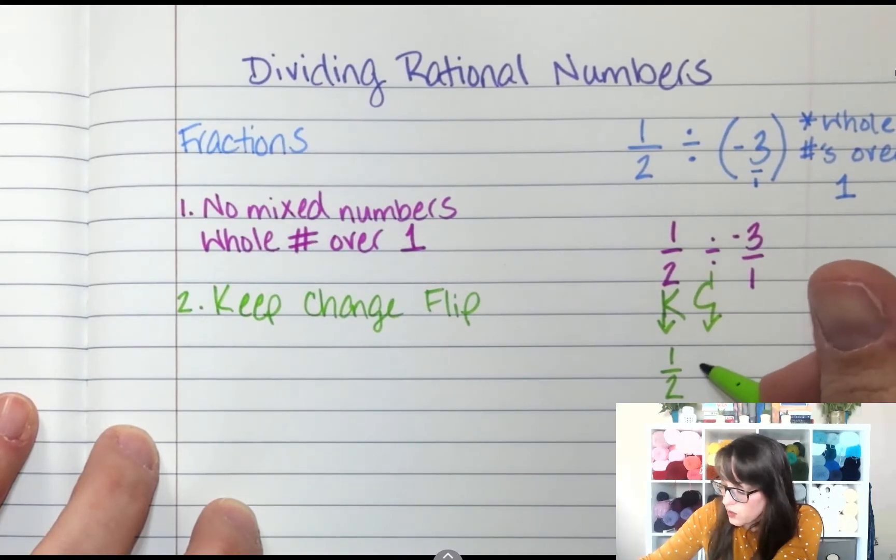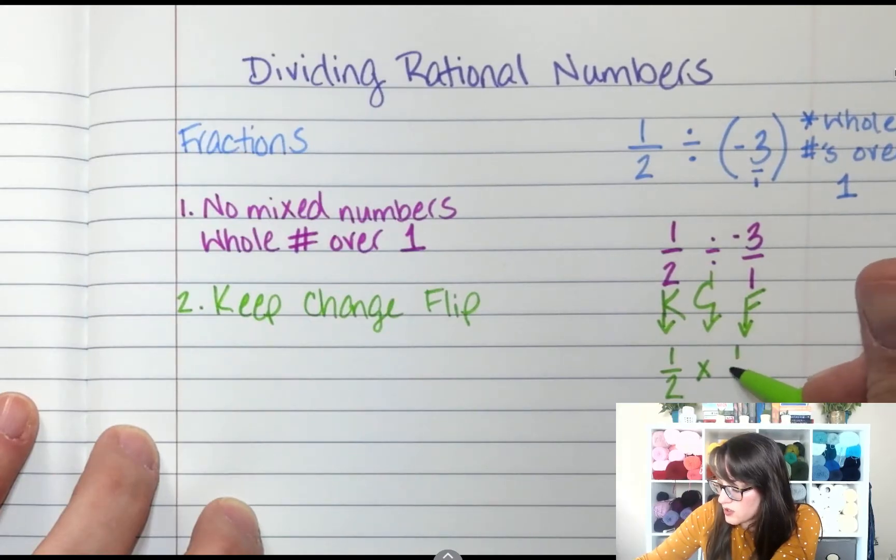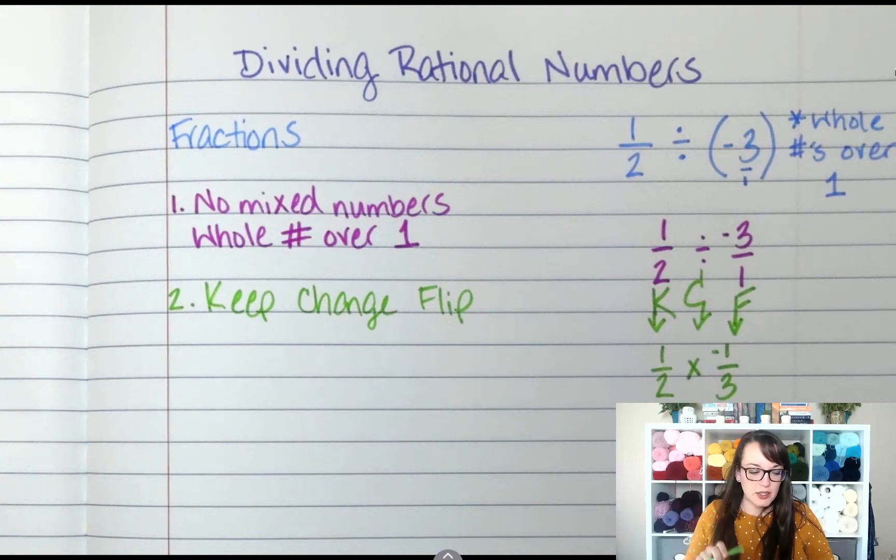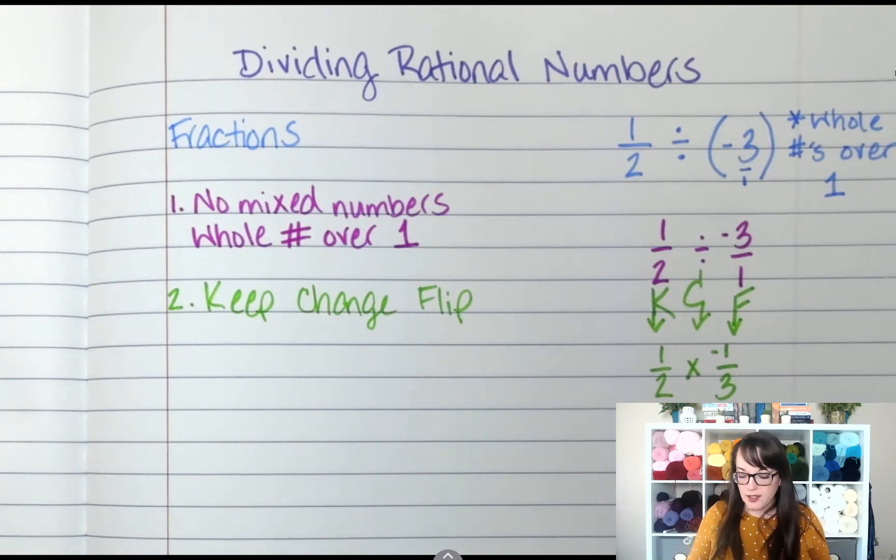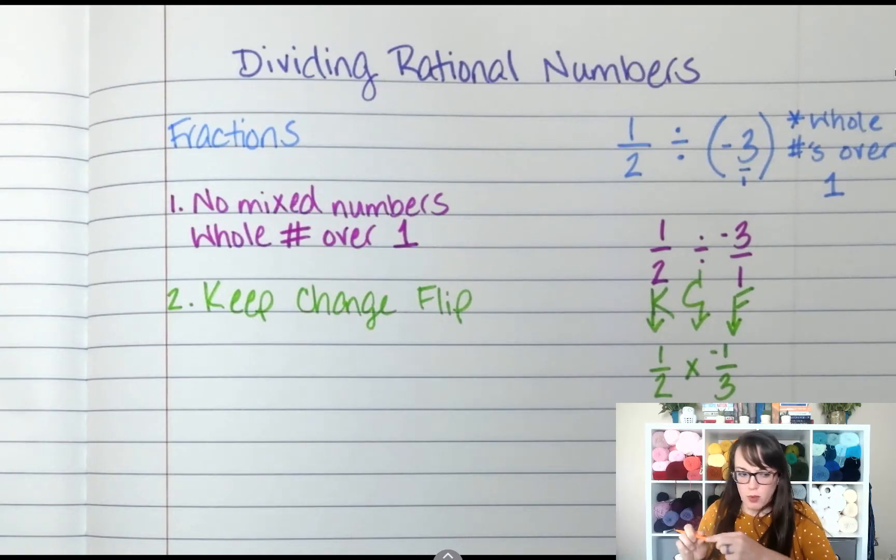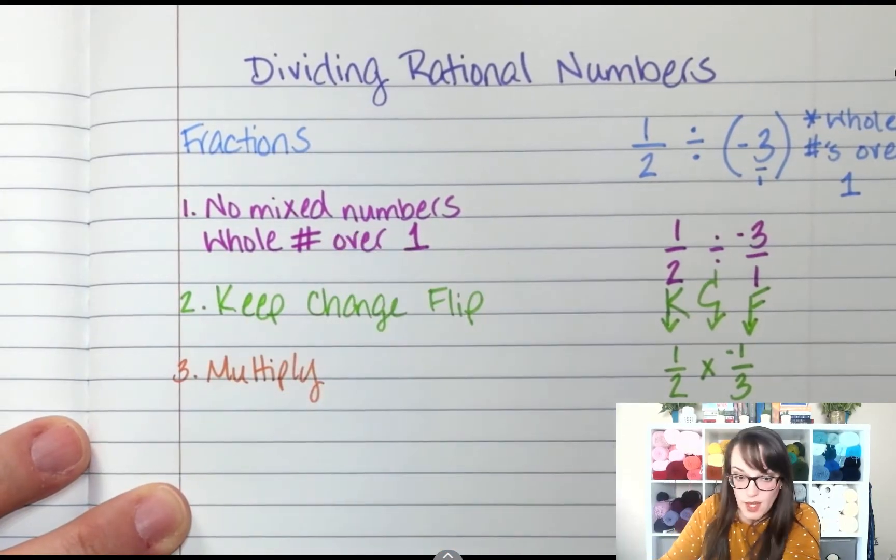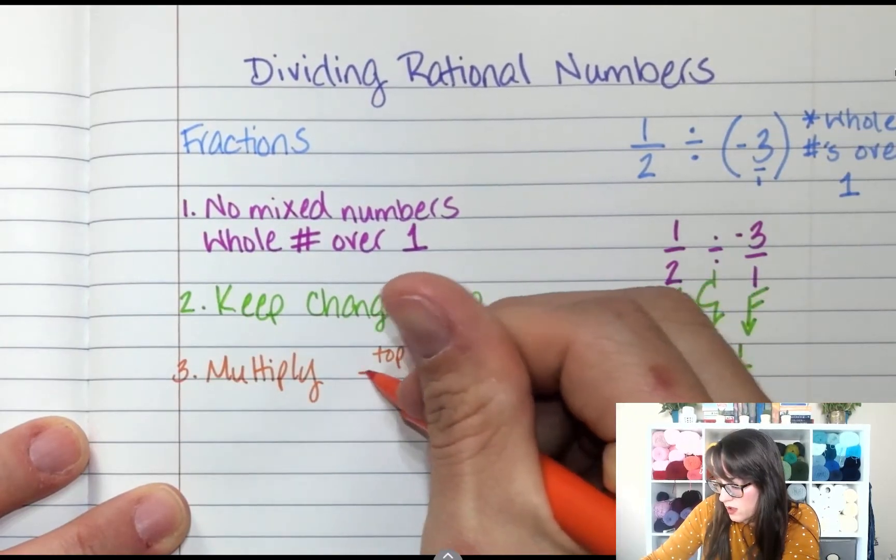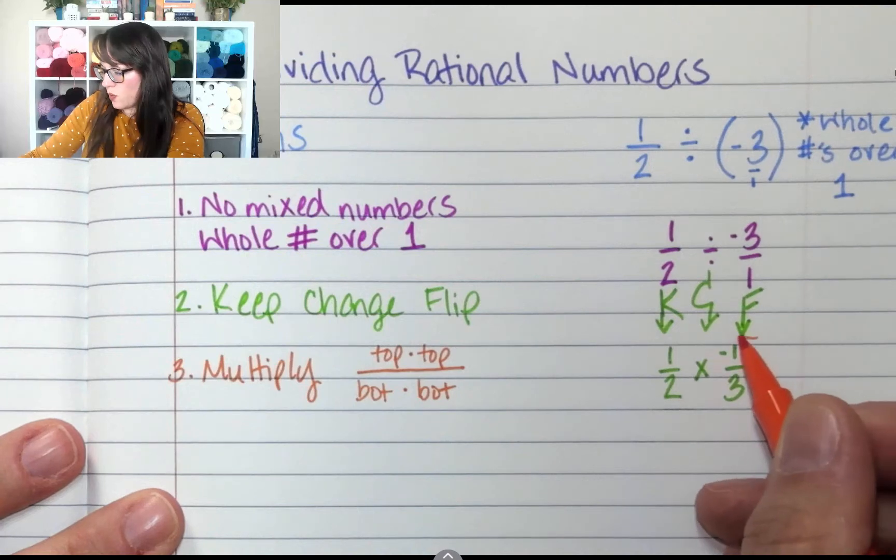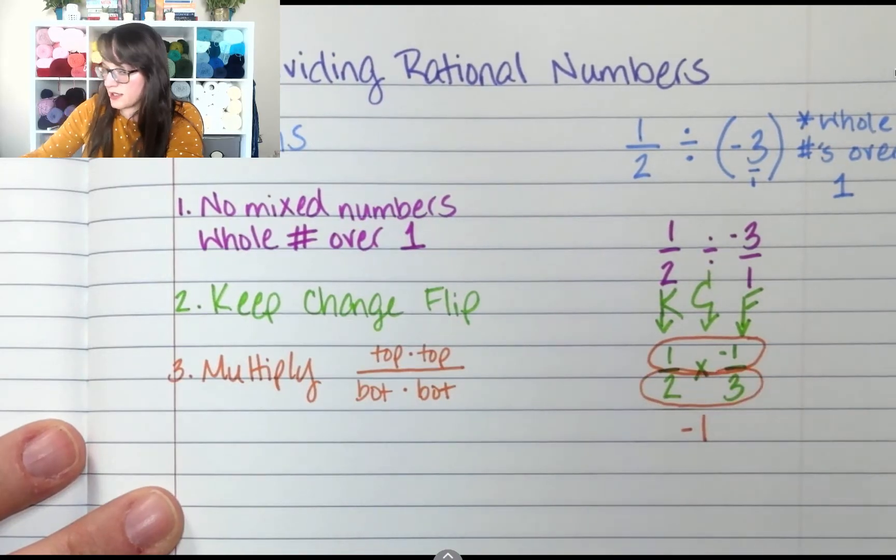And this is still a negative—this stays negative—and we can keep that negative with the numerator. Now we have multiplying fractions, and we did that a couple lessons ago, so we know how to multiply fractions. So step 3 is we're going to multiply. We multiply top times top over bottom times bottom. So 1 times negative 1 is negative 1, and 2 times 3 is 6.